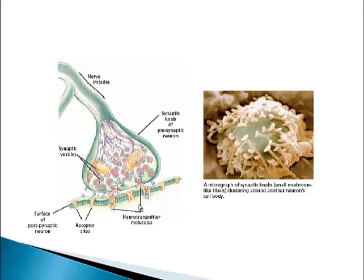This terminal button right here is very, very close to the dendrite of another neuron. And when I say close, I mean close — they don't actually touch. Notice that there is a tiny little gap there, which is actually known as the synaptic gap. I love when things are named exactly what they are.